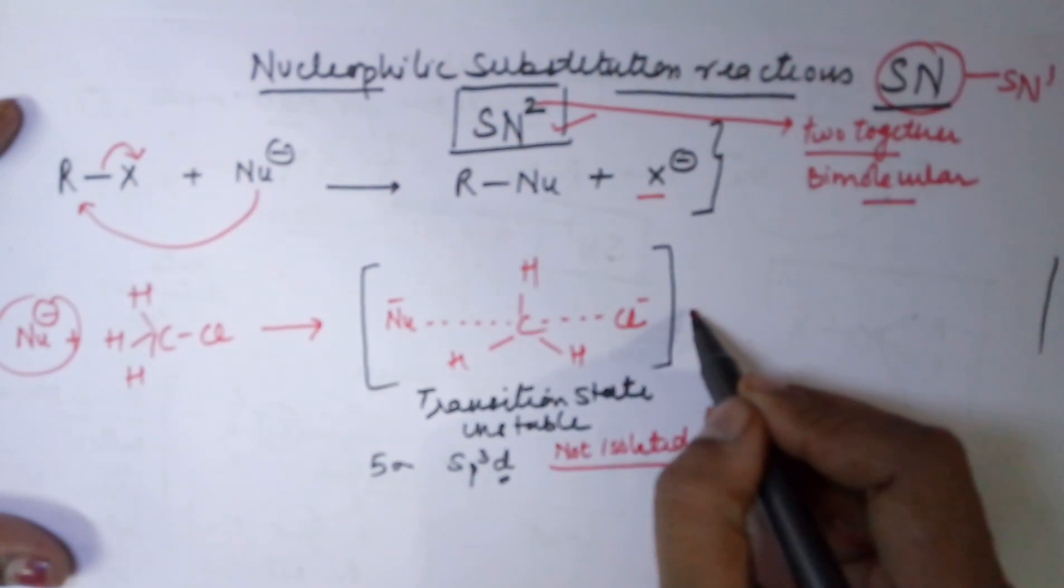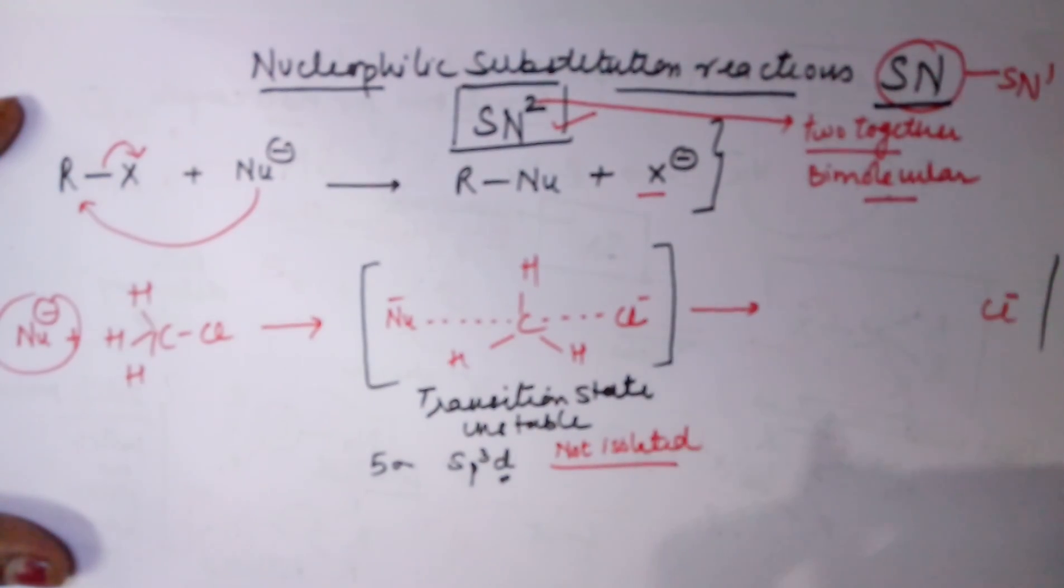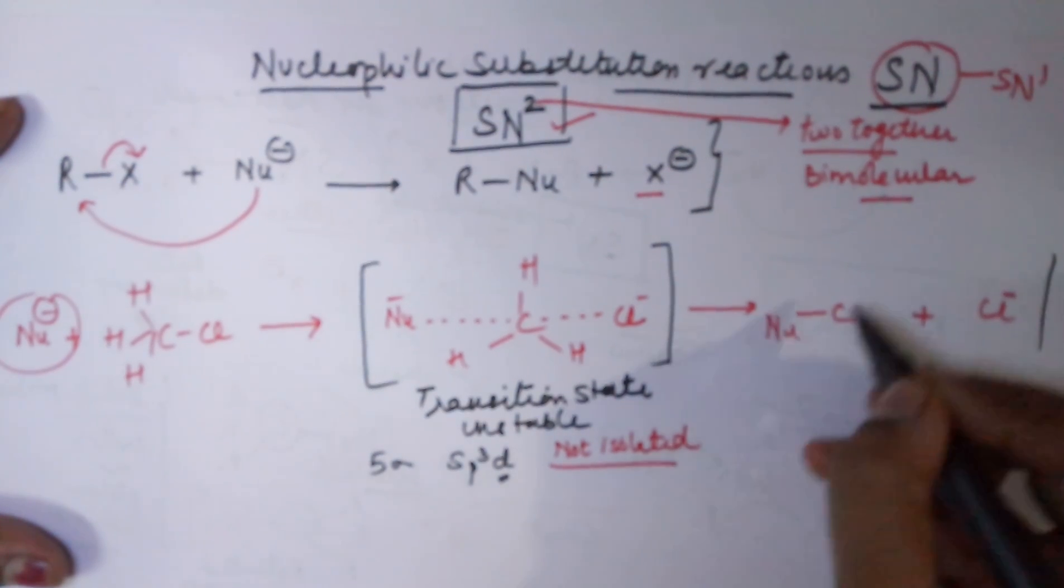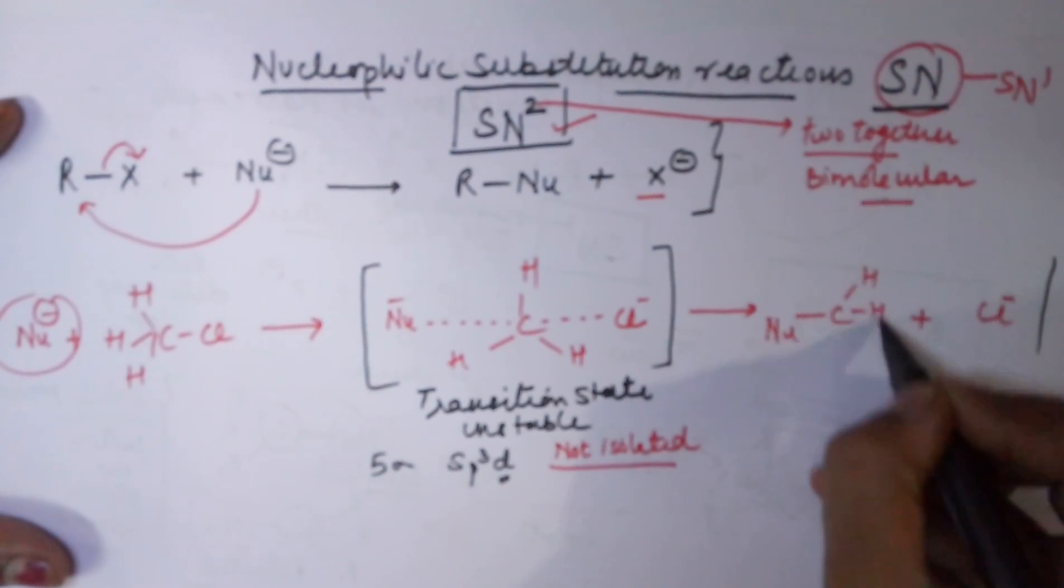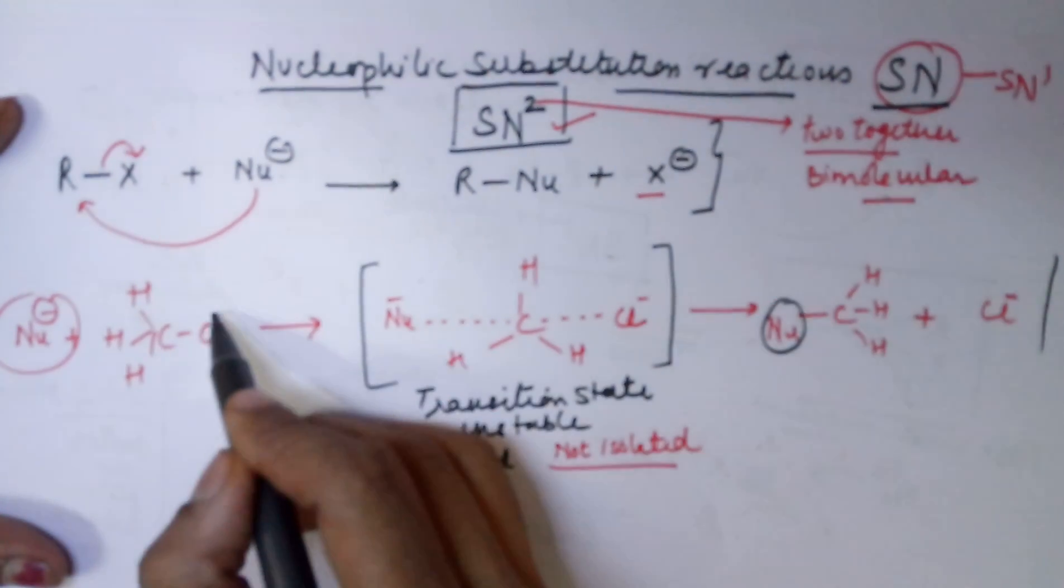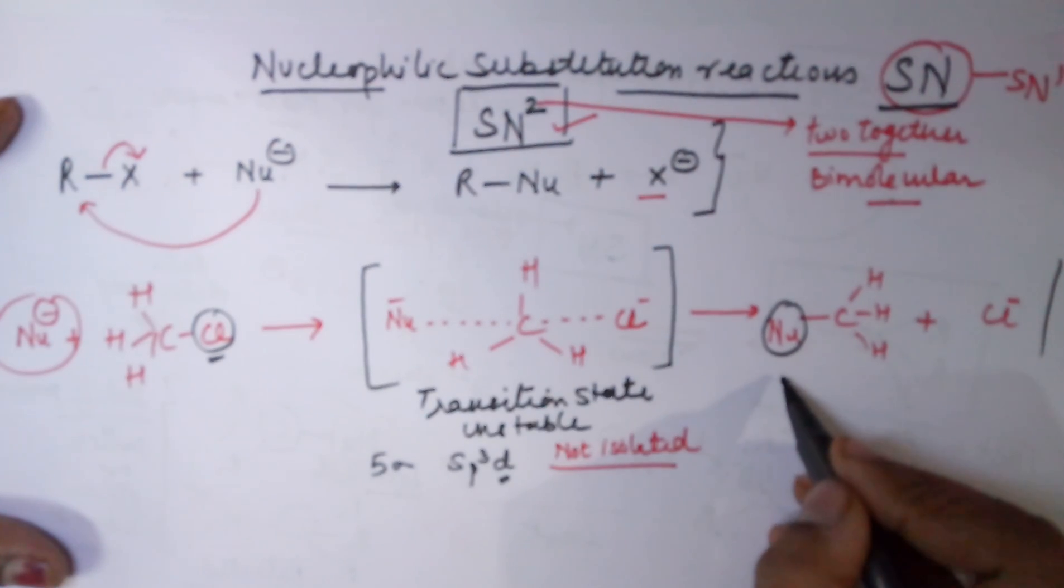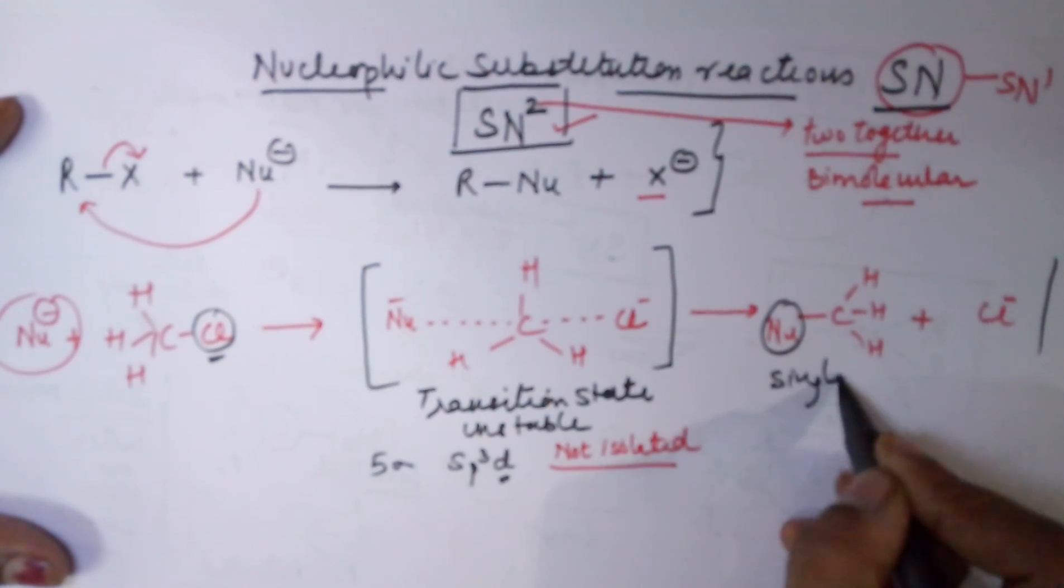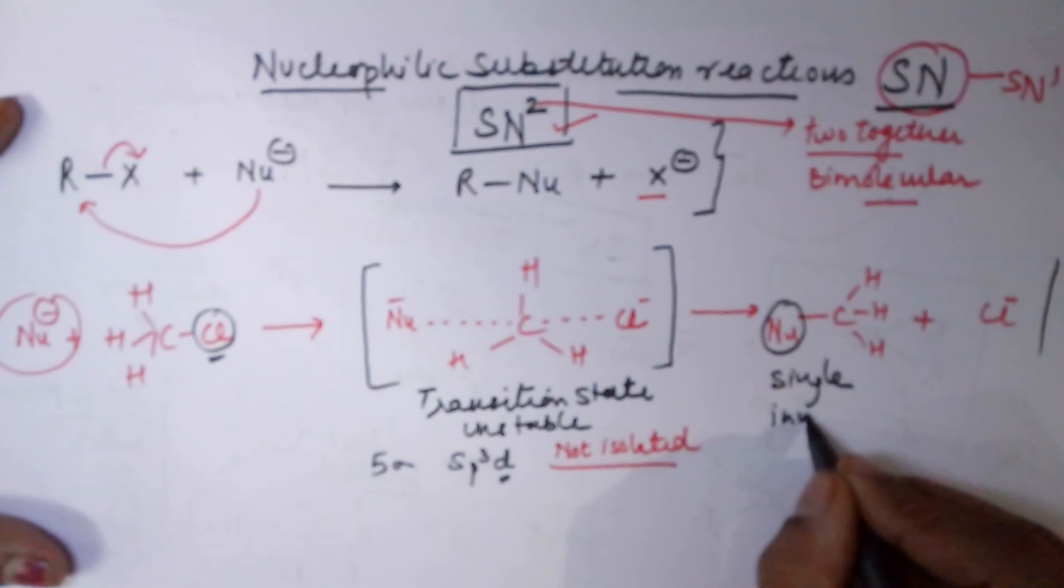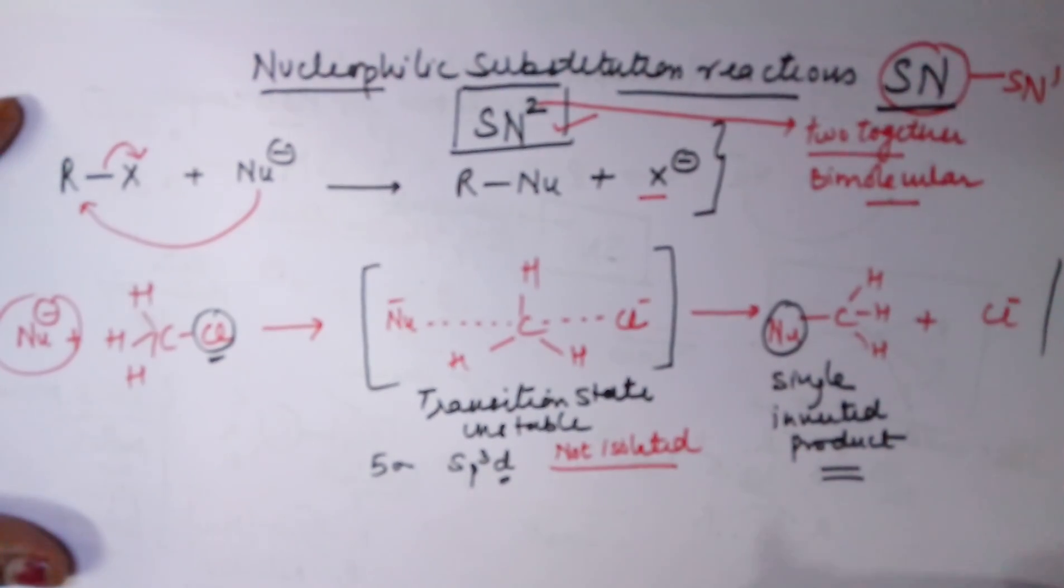Finally, when this reaction further moves ahead, the Cl- ultimately leaves and you are left with a carbon, a nucleophile, and three hydrogens. You can clearly see the nucleophile is attacking from the side opposite to the Cl leaving. Hence, the product is single. Secondly, it is always inverted. You would get a single inverted product in this case.